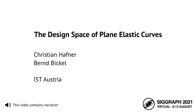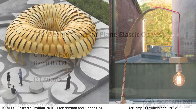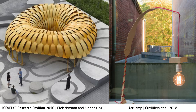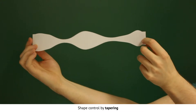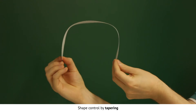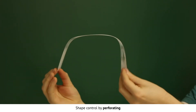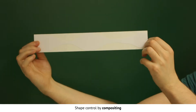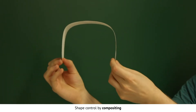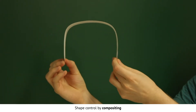Active bending is an economic method to build intriguing curved structures from flat elements. Digital fabrication methods allow the manufacture of beams with variable stiffness — for example, by tapering, perforating, or compositing. This expands the design space attained by active bending.